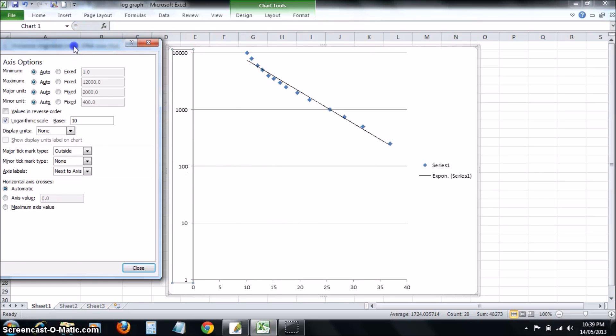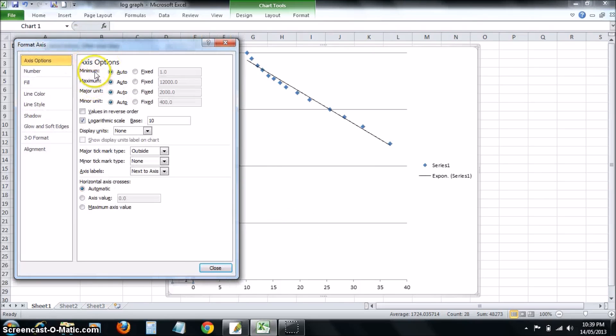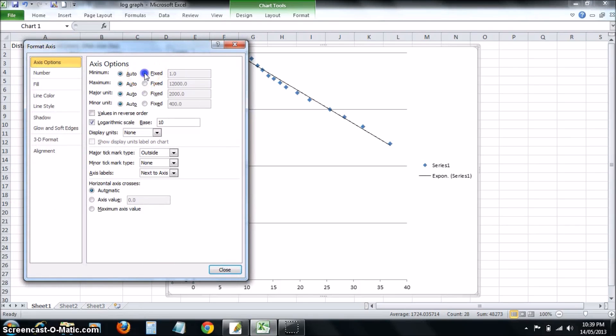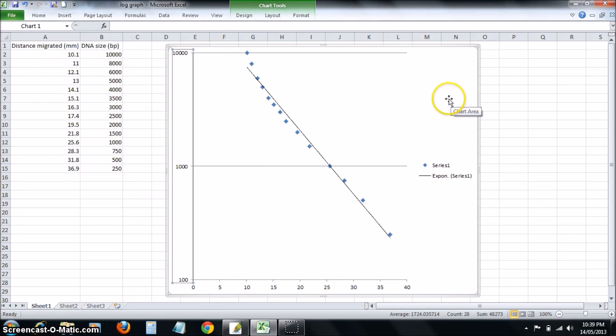To get rid of that, you can change the minimum or the maximum value that your axis has. I'm going to set the minimum to 100, minimum fixed, 100. There we go, now the graph takes up most of the space.